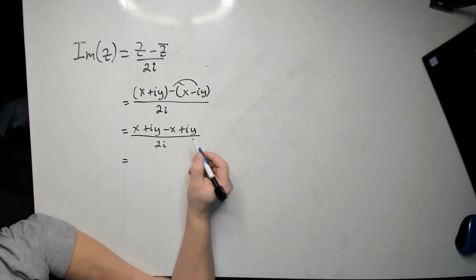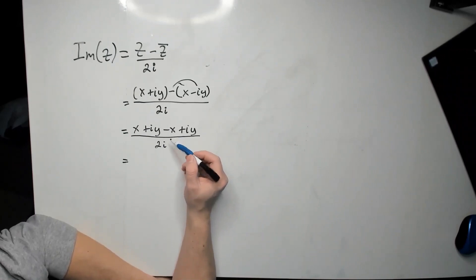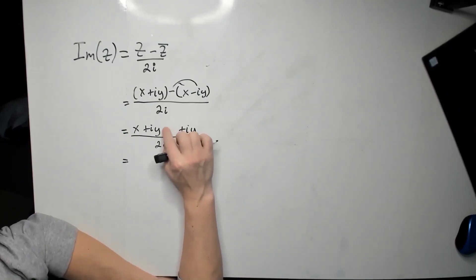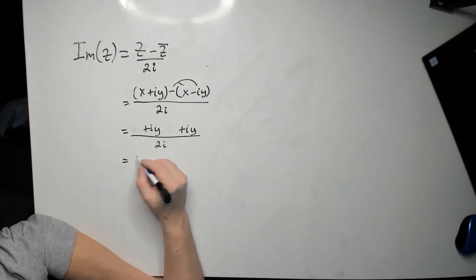Continue here. Cancel off what you can. So specifically notice that x and negative x are opposites, so basically erase them away. And that gives you then the following iy plus iy over 2i.